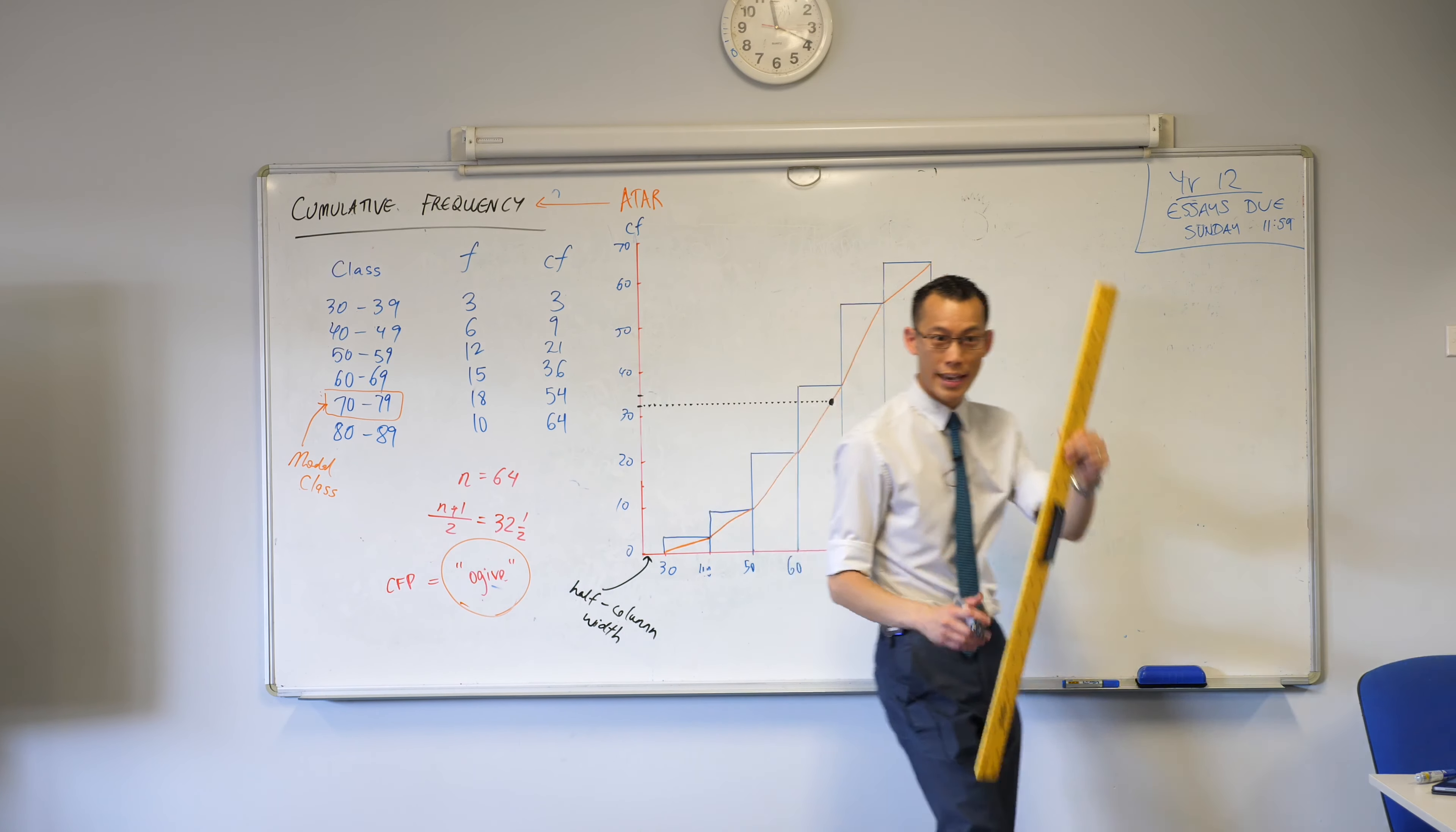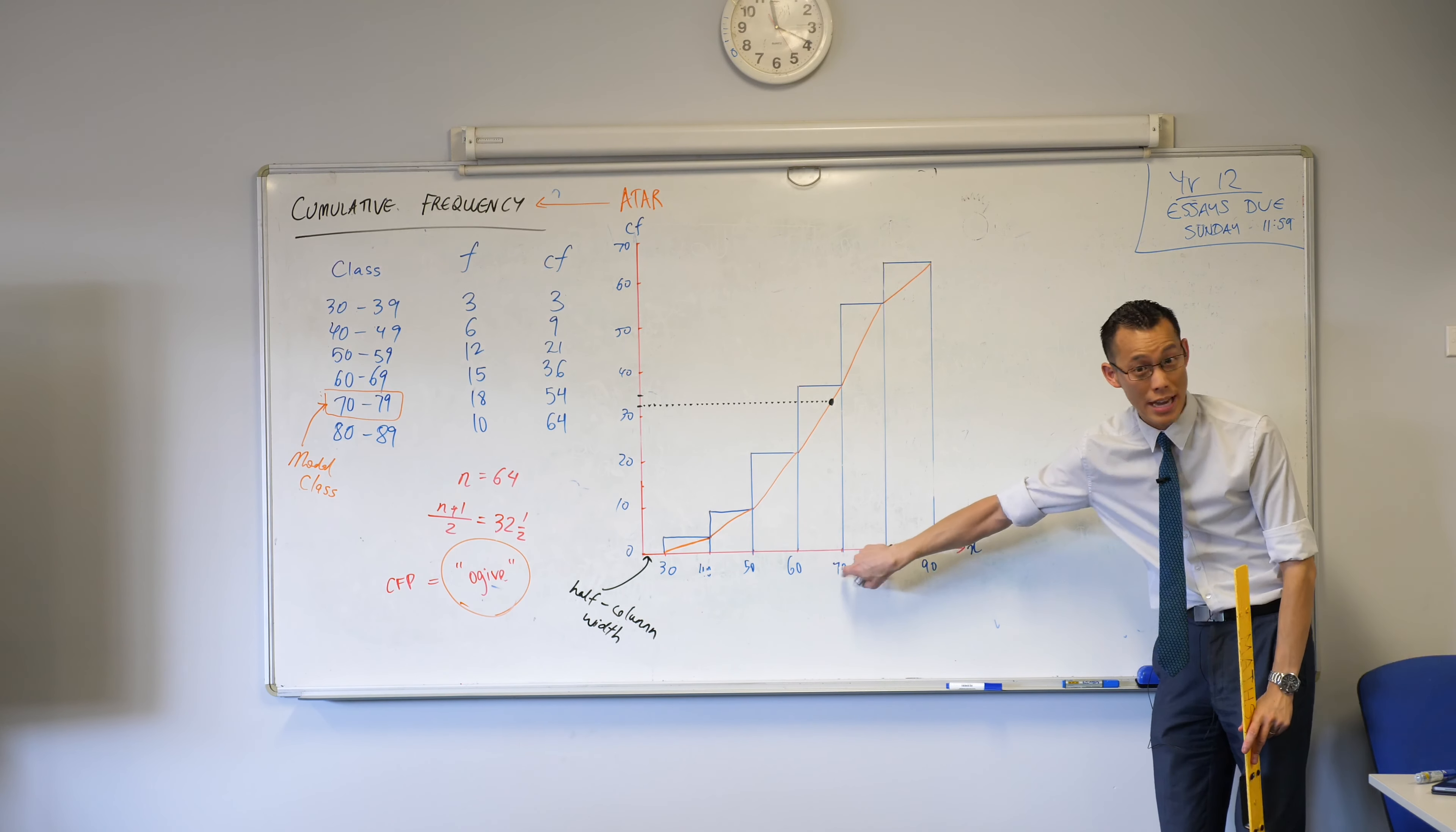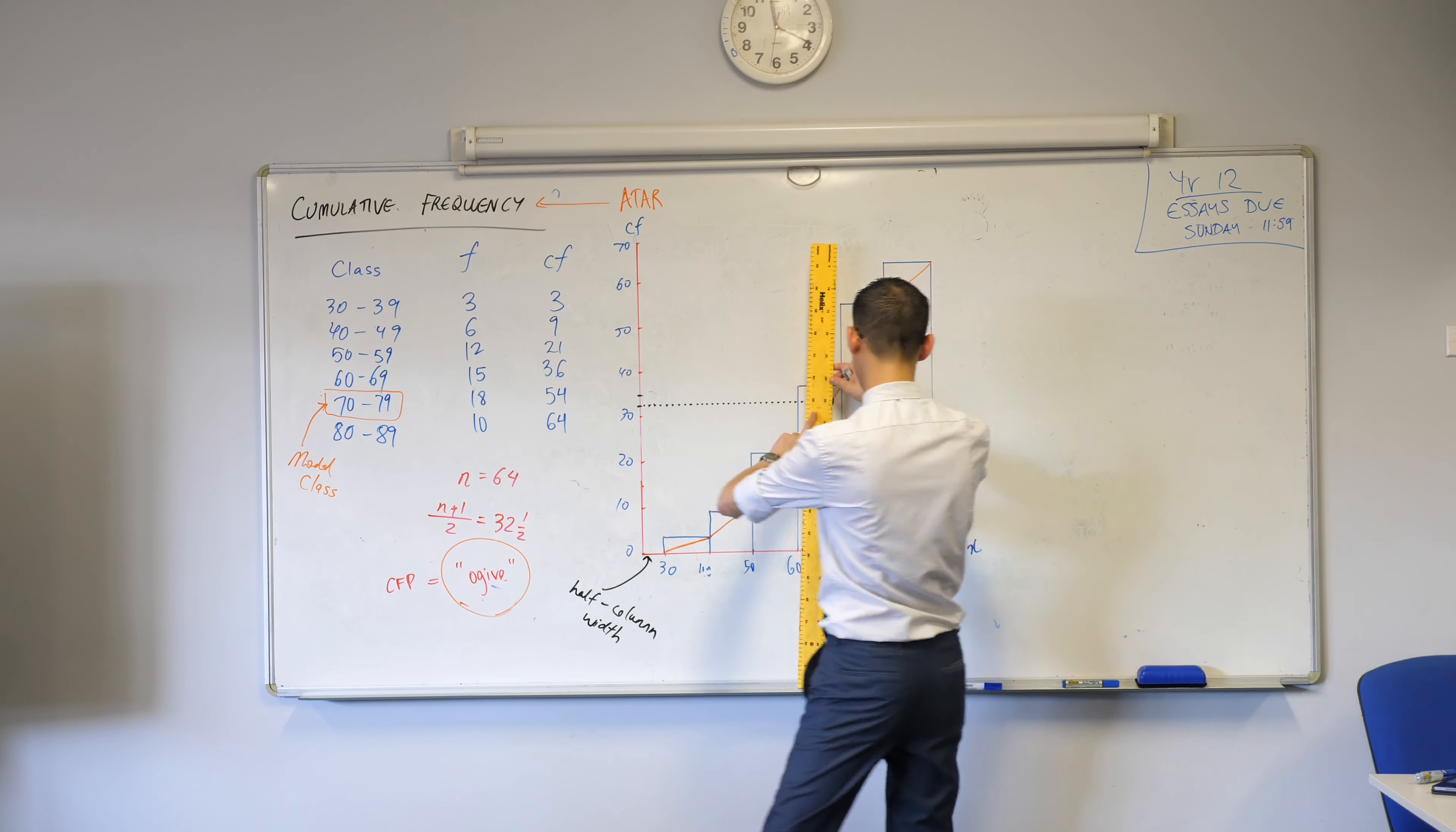But we can go better than this. Get your ruler again. Don't just draw across. Now draw vertically. Draw down and you get better than a class. You actually get a median value down here that you can read off the graph. This is why your precision was so important. So go ahead again. Use your ruler like we did before.